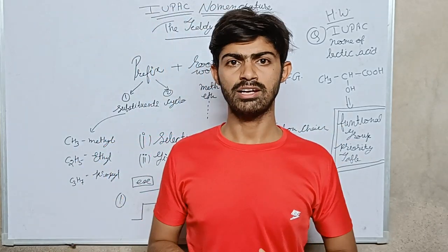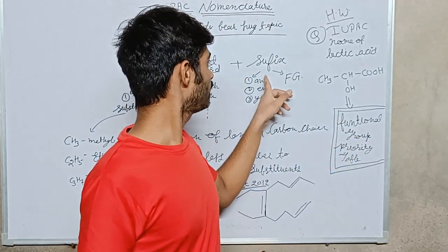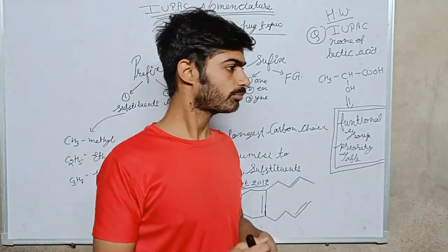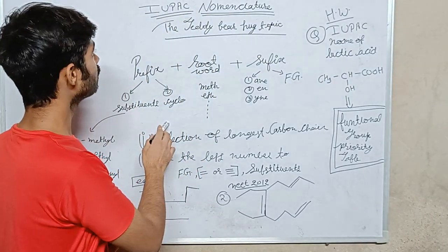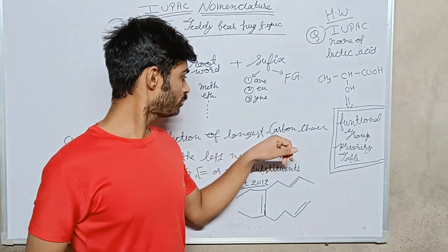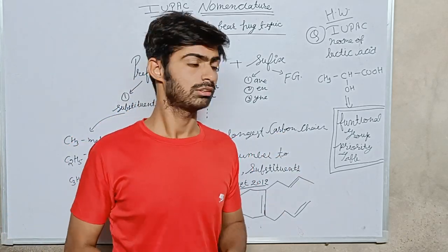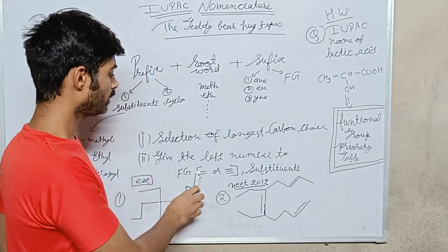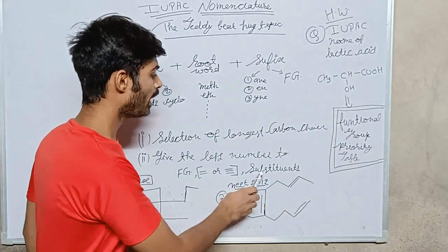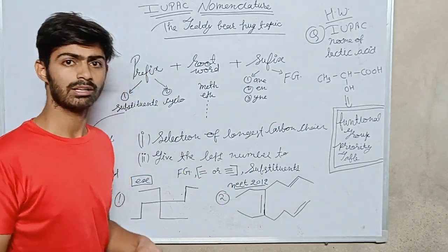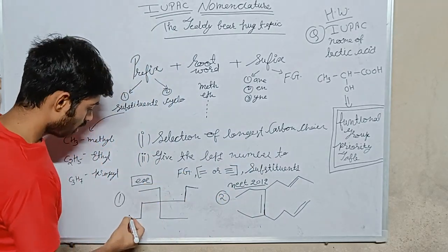Suffix: an, en, yn. En means alkene, yn means alkyne, and functional groups. IUPAC nomenclature rules: first, selection of longest carbon chain; second, give the less number to the functional group, double bond or triple bond, and substituents. Here are two examples I'll give you.